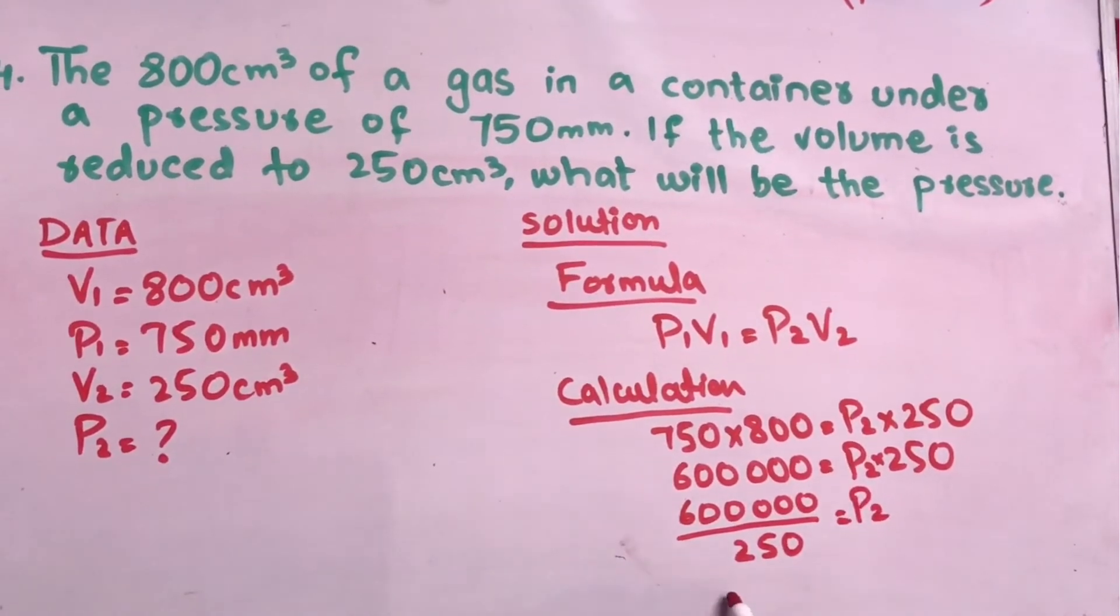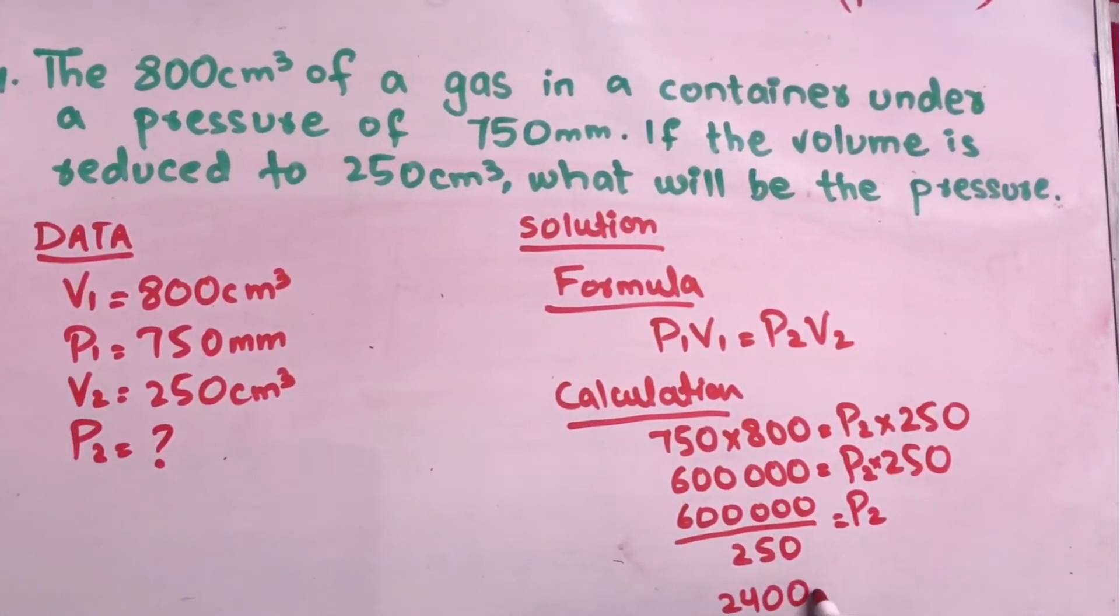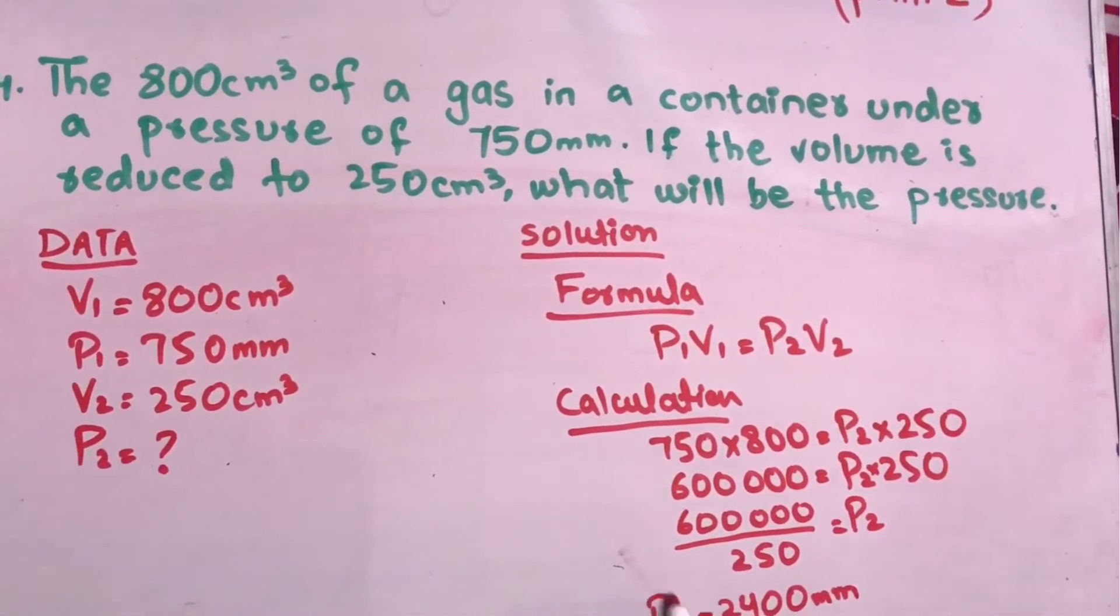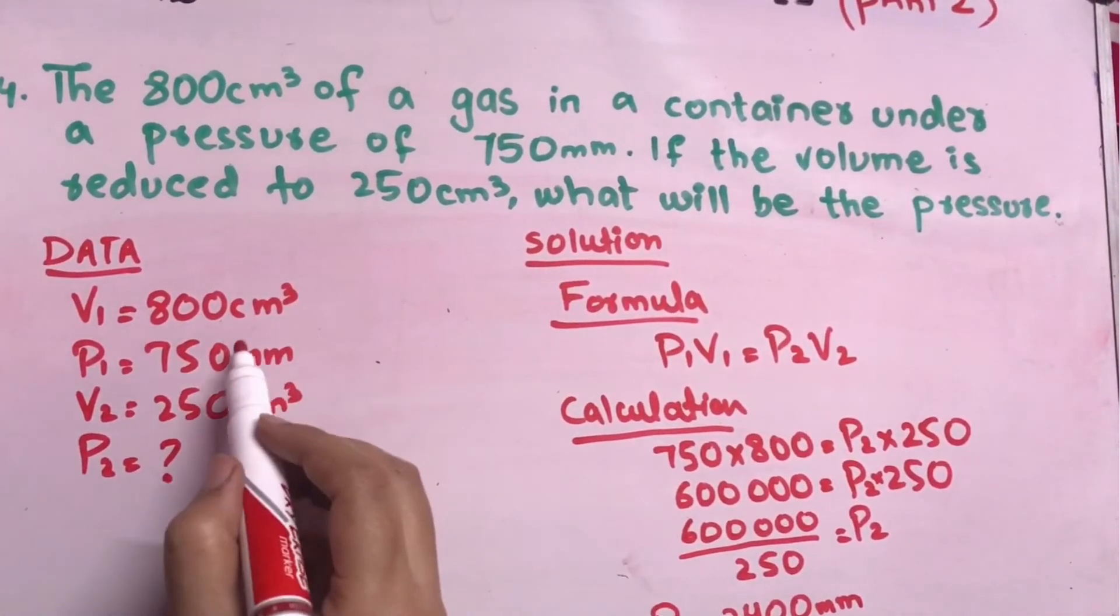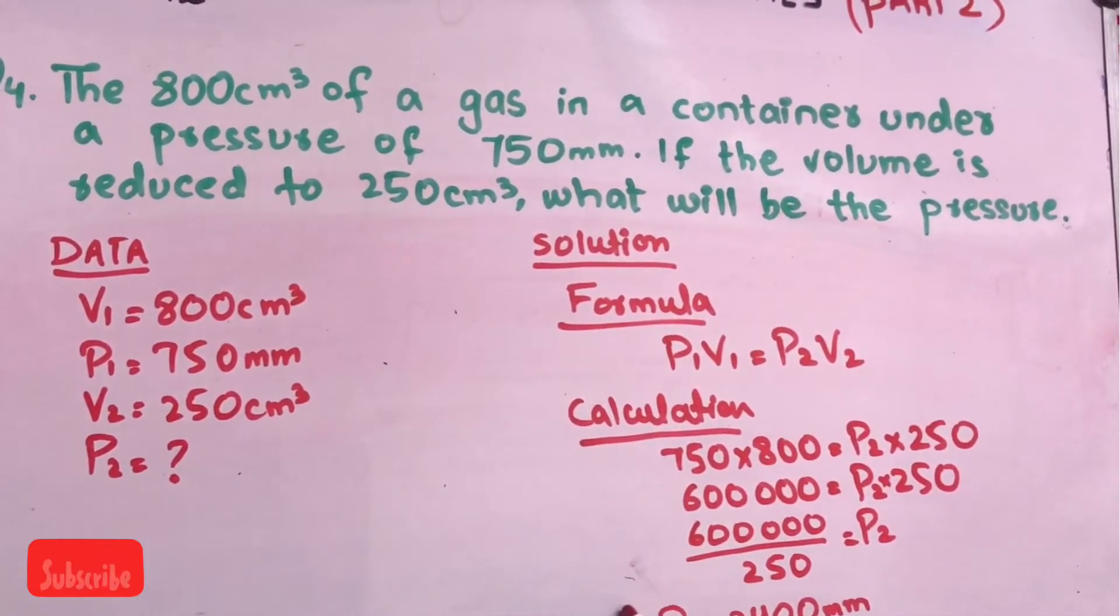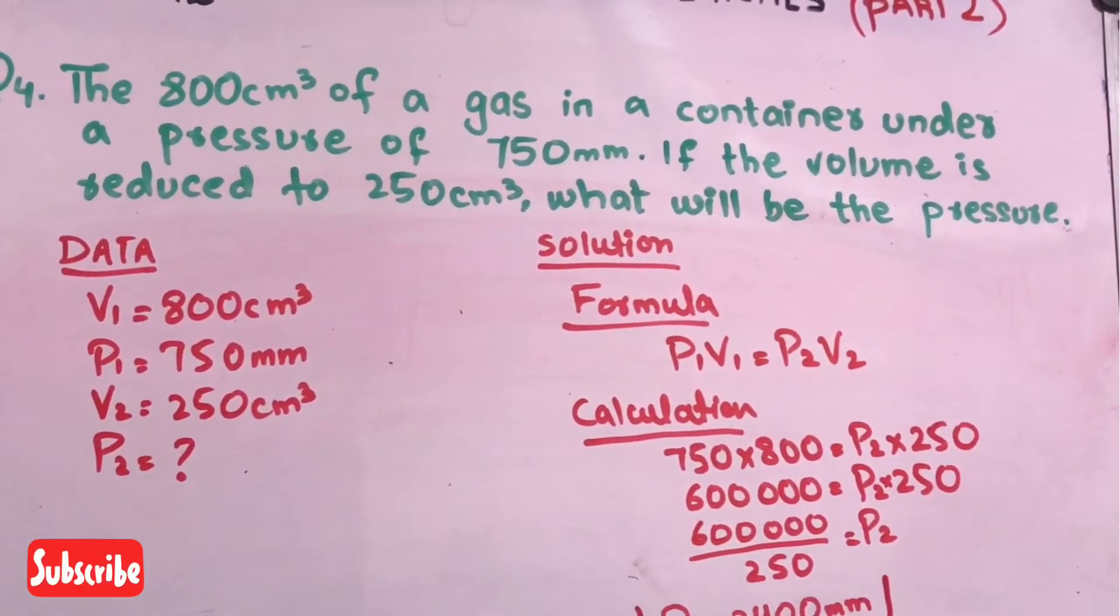And you will get 2400 millimeter. The unit will be the same as they have mentioned in the first pressure. So this is our final pressure.